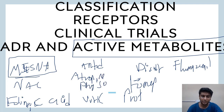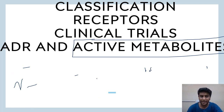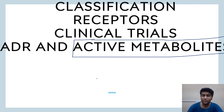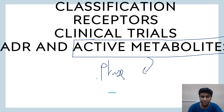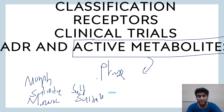Mesna is used to treat hemorrhagic cystitis caused by acrolein, the toxic metabolite of cyclophosphamide. Doxorubicin causes cardiotoxicity. Regarding active phase-two metabolites, only three drugs are notable: morphine-6-glucuronide, sulindac sulfide metabolite, and minoxidil sulfate. Phase-one metabolites of certain other drugs are more active after oxidation, reduction, or hydrolysis.